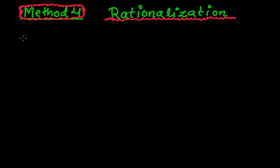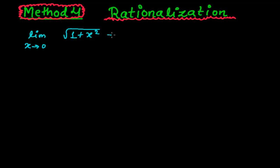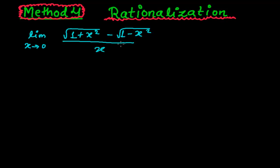Let me give you a small example. Suppose the limit as x tends to 0 of root over (1 + x²) minus root over (1 - x²), all divided by x. For this kind of problem, we have to rationalize by the numerator.